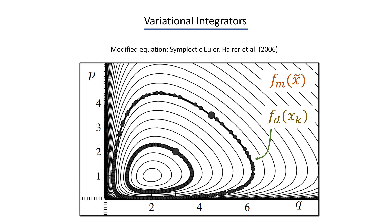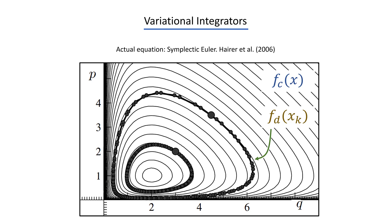On the other hand, if we use a variational integrator, in this case the symplectic Euler method, we can see that now the modified equation is periodic. And therefore the discrete approximation also has this structure. And even though we have a slight deviation from the actual system, because the actual and the modified equation are structurally similar, we get a very good performance.